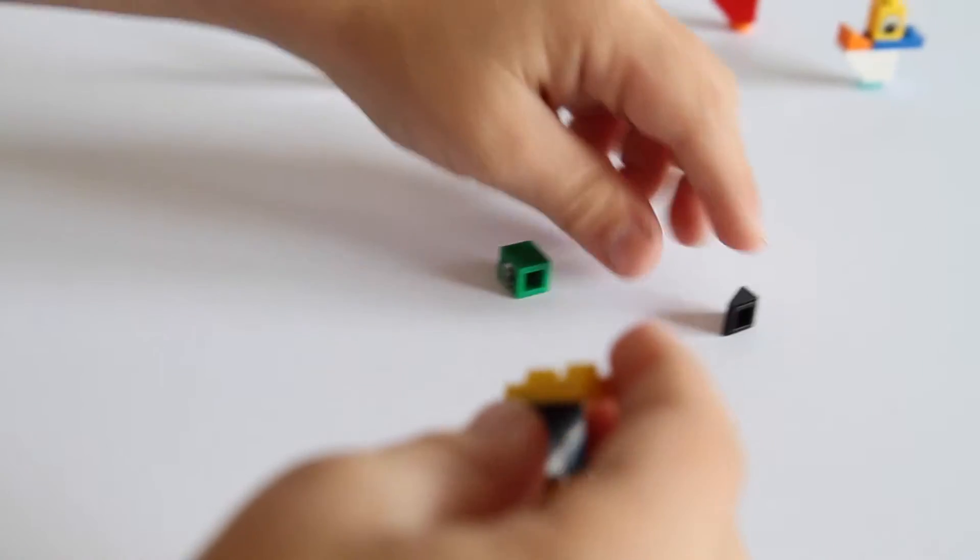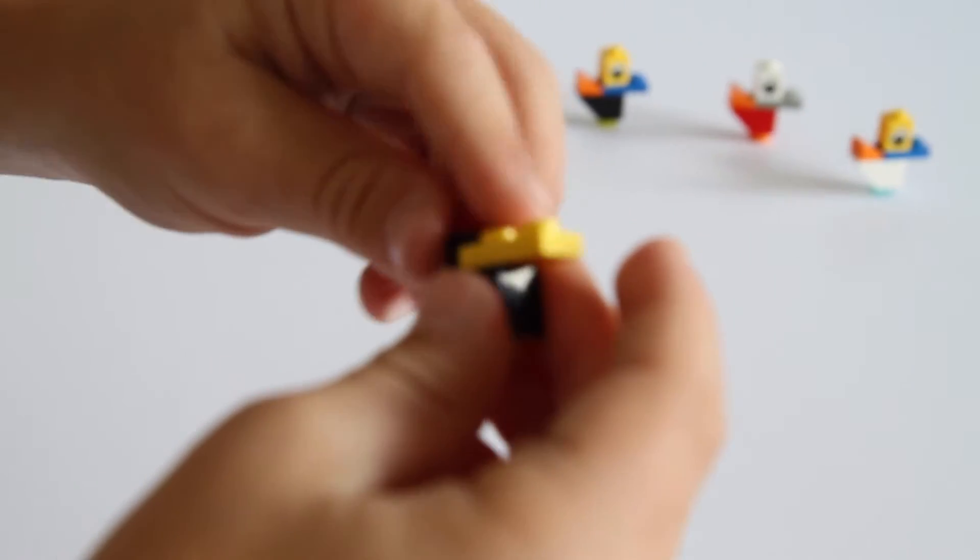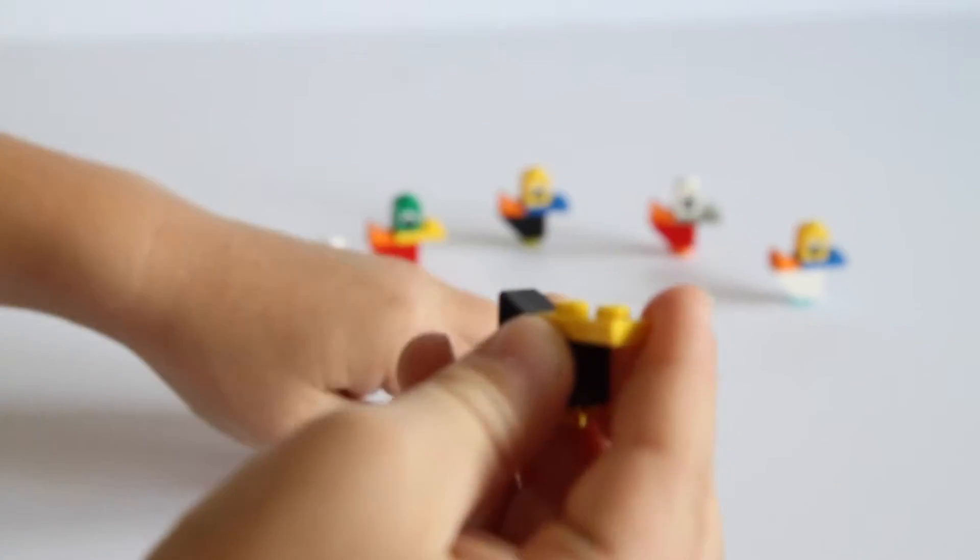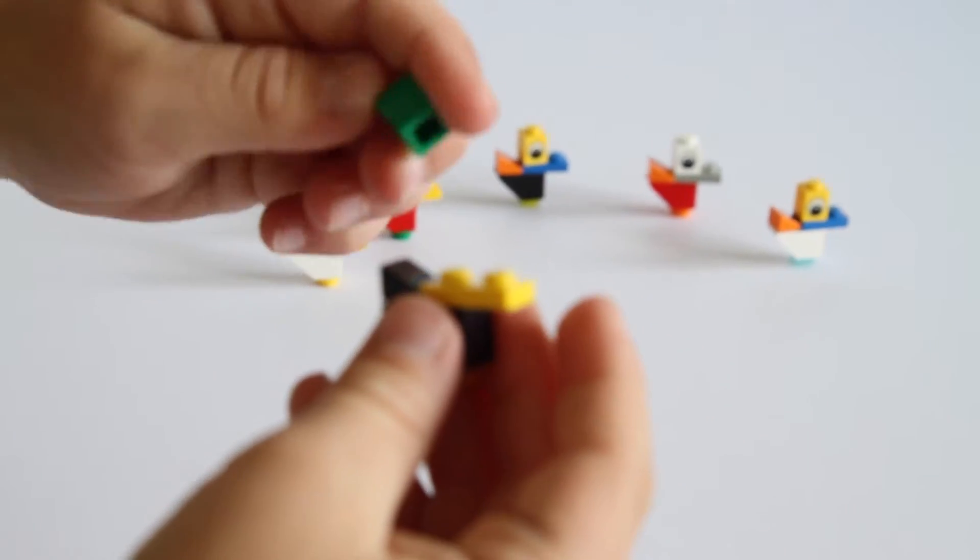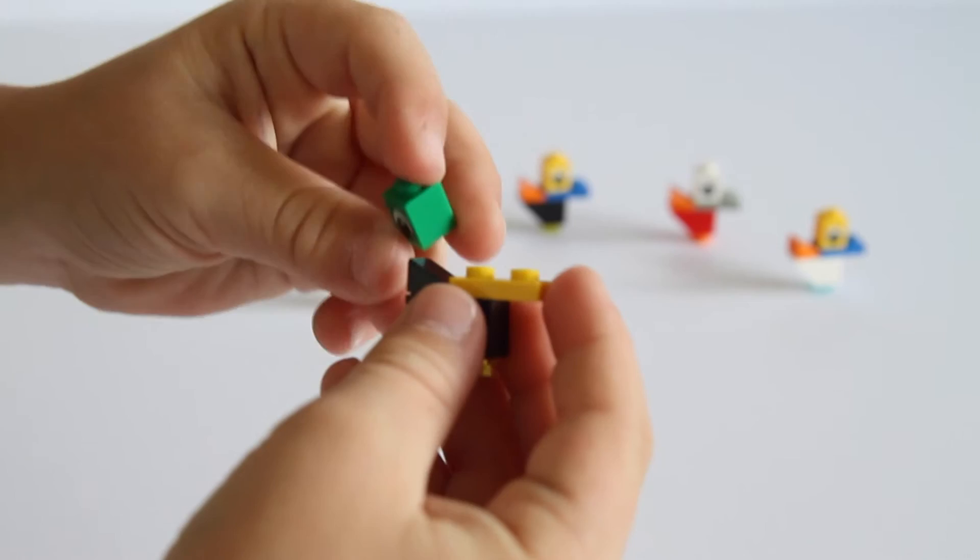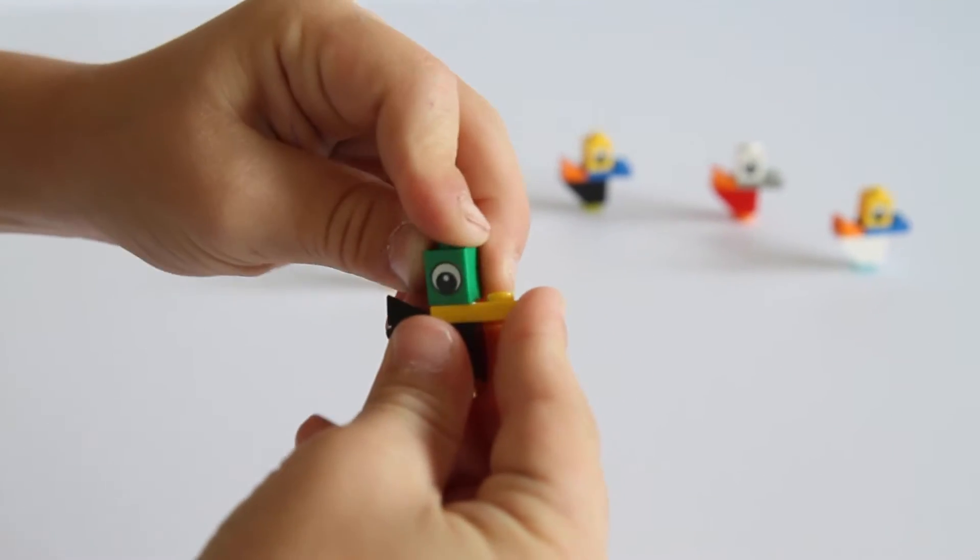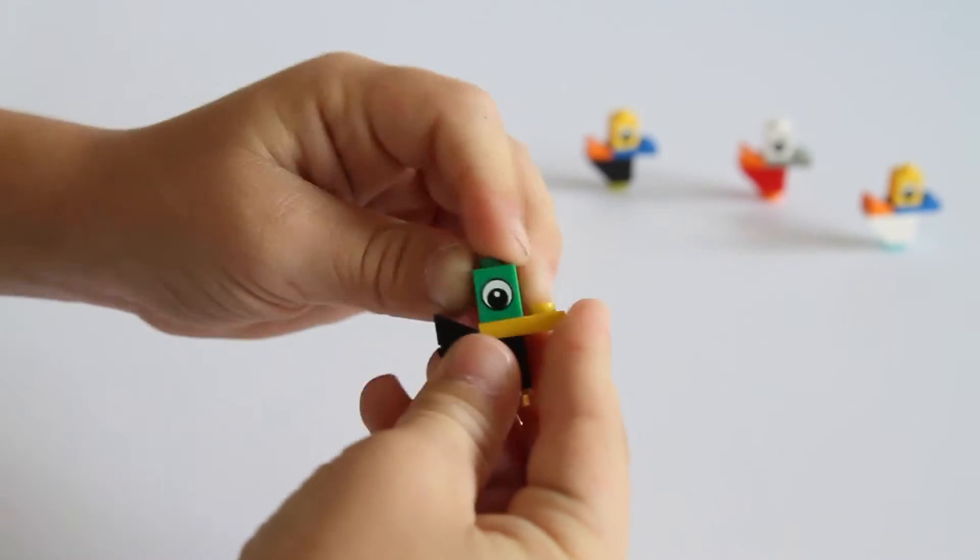Then you grab your other black piece and make sure it's pointing at the yellow piece, and then you grab your eye and make sure it's facing this way, and there you got your bird.